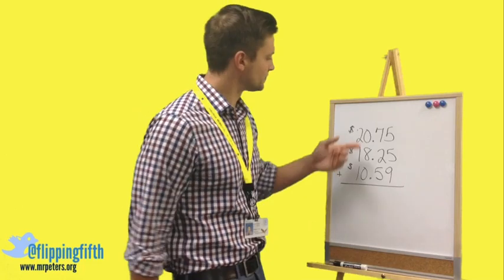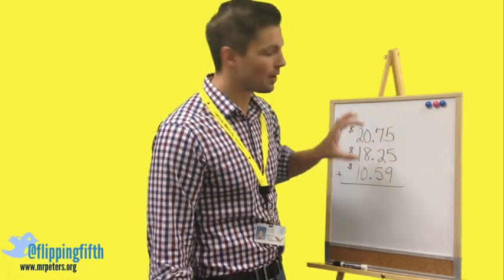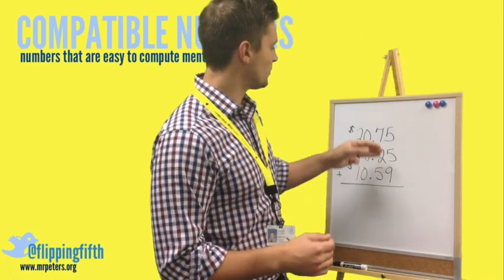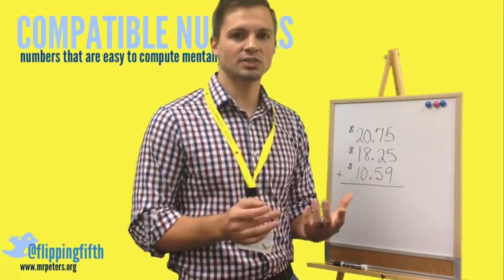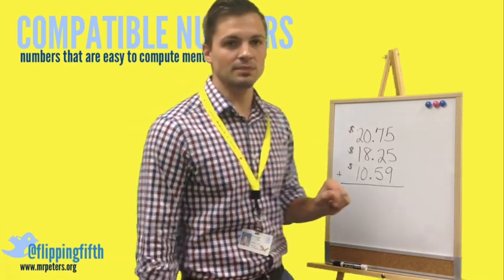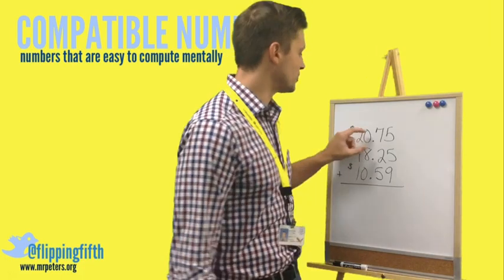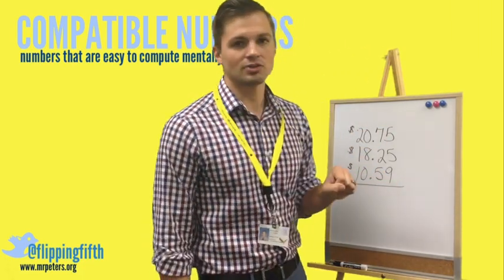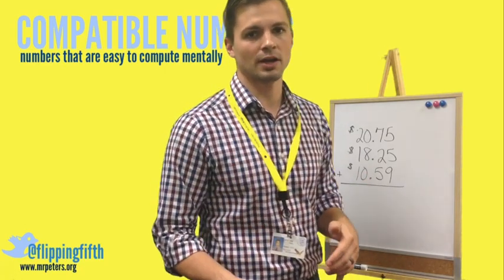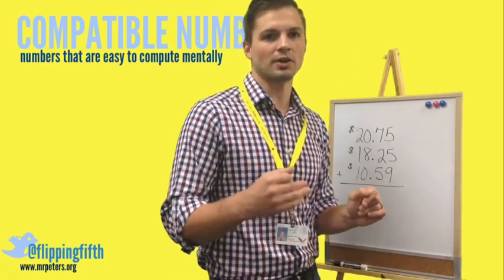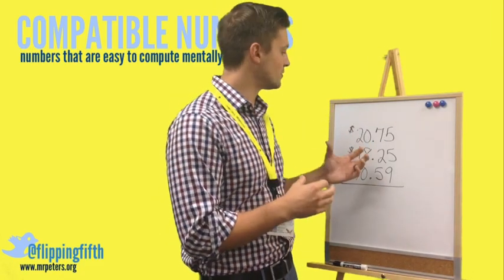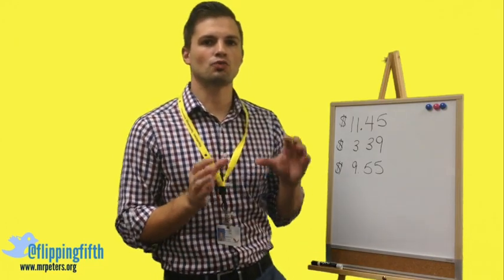Let's break this problem down. We want to look for numbers that work together nicely. The 75 cents and 25 cents jump out immediately because 75 plus 25 gives 100, and 100 cents is $1. So now we have $1. Then 20 plus 18 is 38, so $38 plus $1 is $39. We're left with $10.59 — adding $10 gives $49, and since we have no cents at that point, we just add the 59 cents. Our answer is $49.59, done entirely in our heads using the associative property.